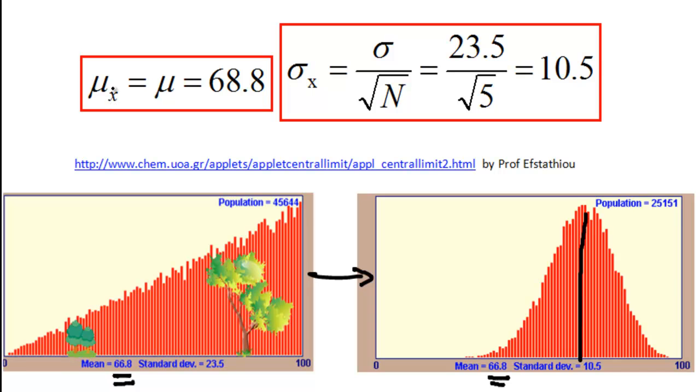Okay, so we are saying here mean of the sampling distribution will be equal to mean of the population. And I'm kind of showing it to you already here in this graph we've got a mean of 66.8 and guess what when we did the sampling distribution of the sample mean we get exactly the same mean.